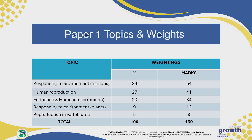Human reproduction covers 41 marks of the paper, which is 27%. The endocrine system and homeostasis in humans covers 34 marks, which is 23% of the paper. Responding to the environment in plants counts only 13 marks but is a very important topic, and it's often where the scientific investigation is asked. Reproduction in vertebrates covers eight marks, which is only 5% of the paper.